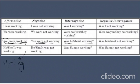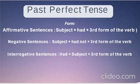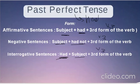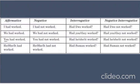Past Perfect Tense uses 'had' instead of has/have. Affirmative: Subject + had + V3. Negative: Subject + had not + V3. Interrogative: had + subject + V3. Examples: 'You had worked,' 'You had not worked,' 'Had she worked?' 'Had she not worked?' Remember: Past Perfect always uses 'had' plus the participle (V3).